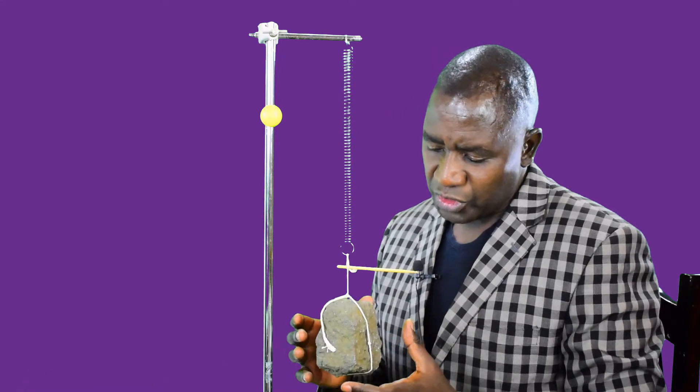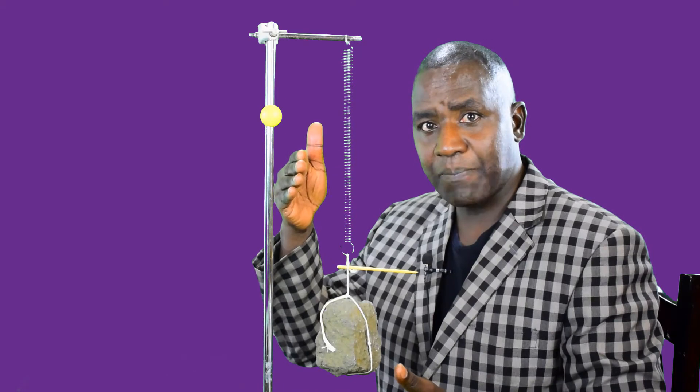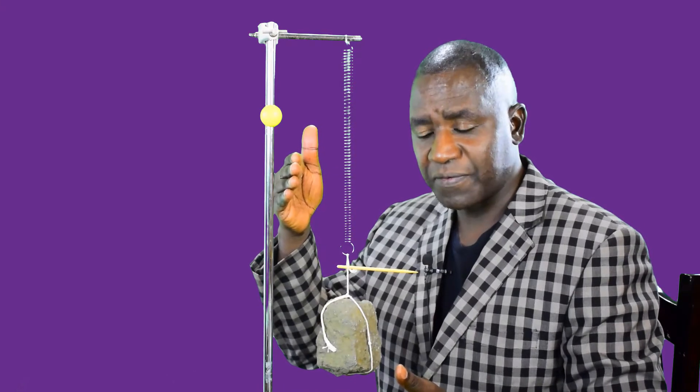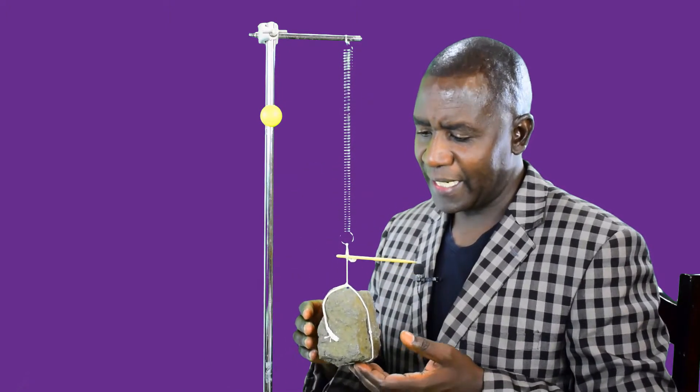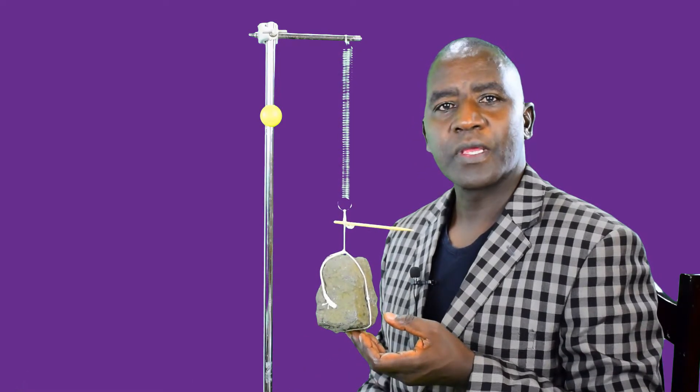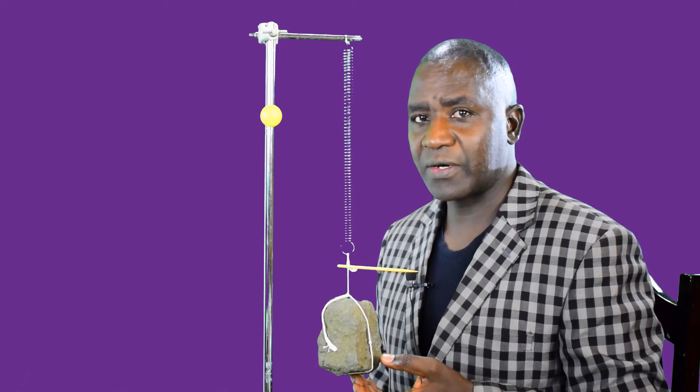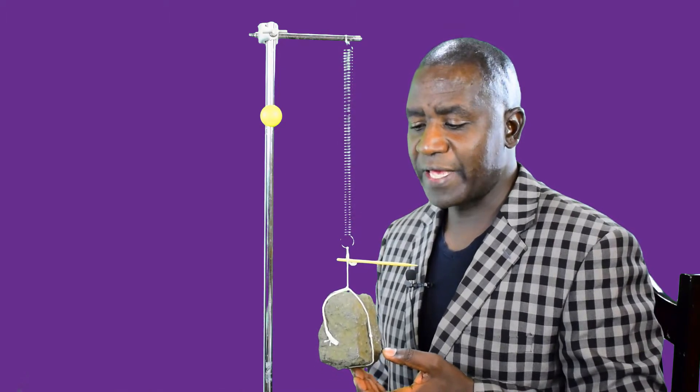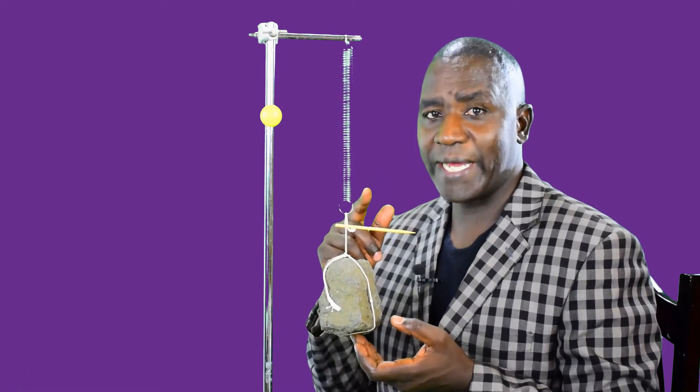We are going to take displacement downwards to be negative and displacement upwards to be positive. So I'm going to give it a positive displacement of 10 cm up. So remember where we have started - displacement is zero, distance is zero. If I give it a displacement of 10 cm up and release it, first of all, before I release it,